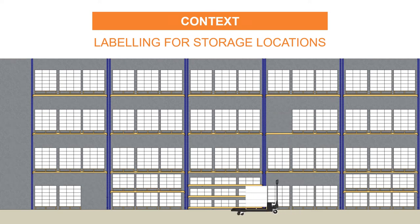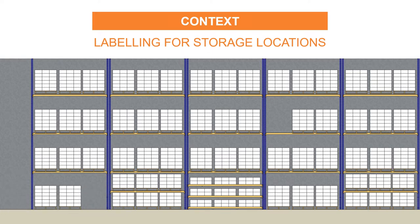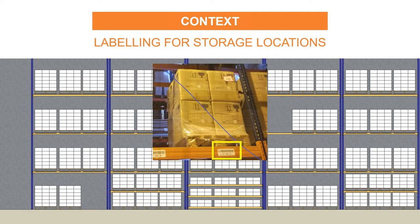Items are stored in racks. On the ground level, you have the picking locations where the preparation team takes items to prepare orders. On upper levels, you have the storage locations used to replenish ground locations. On each location you have a label to get information about the product stored there. In a large warehouse, you may have several thousand labels. Let's explore how we can use Python to automatically generate these labels from an Excel file using item information.